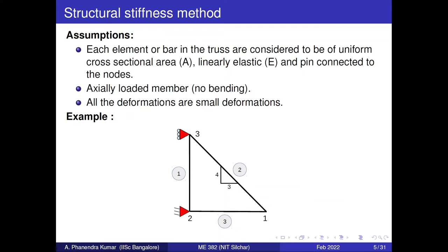The first assumption is that the member should be uniform — it should have a uniform cross-sectional area across its length. The second is that the material should be linearly elastic — stress should be directly proportional to strain. The third is that pin-connected joints should be considered as the nodes. In this structure, the pin joints numbered one, two, and three will be the nodes in the finite element formulation.